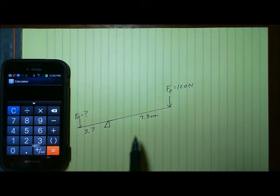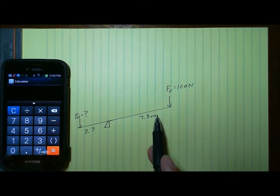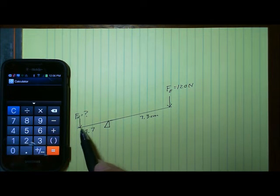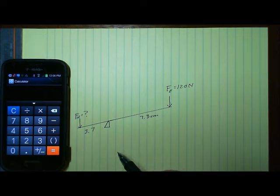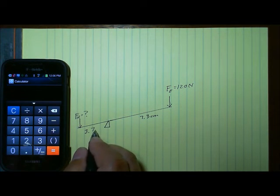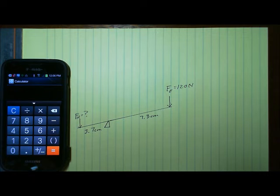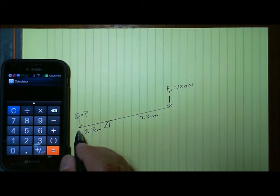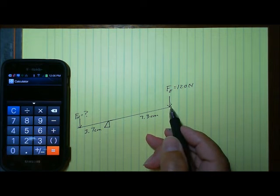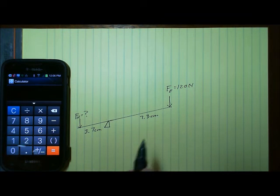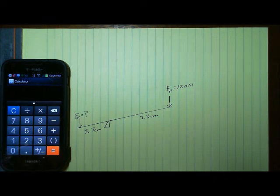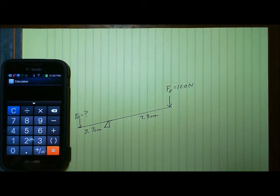I have drawn a first class lever on this piece of paper — I know it's a first class lever because the fulcrum is between the resistance and the effort. I measured both sides with a measuring device and found the output side is 3.7 centimeters long and the input side is 7.3 centimeters long. Go ahead and calculate the ideal mechanical advantage for this lever, then pause the video and we'll check your answer.